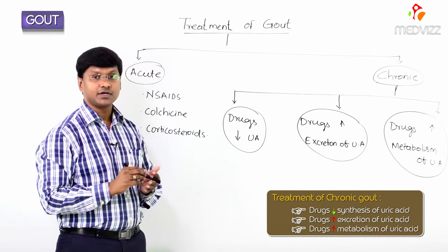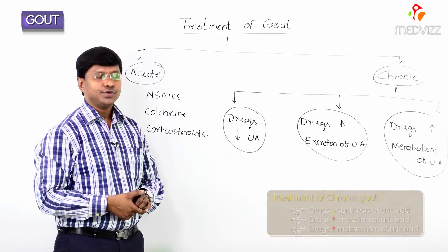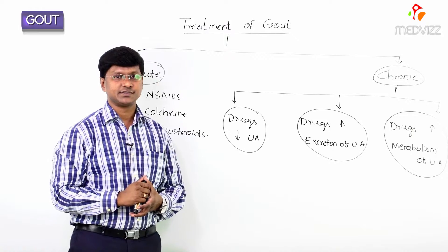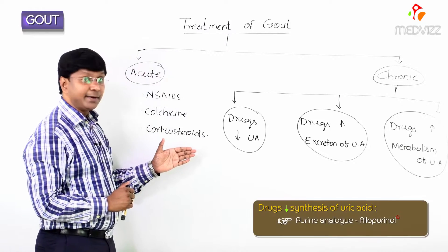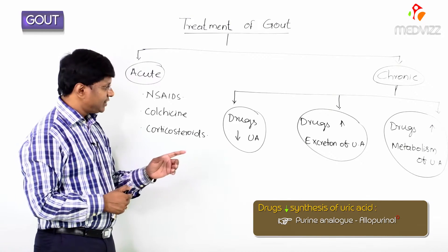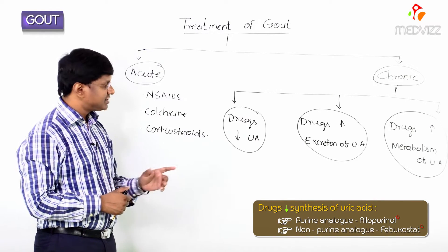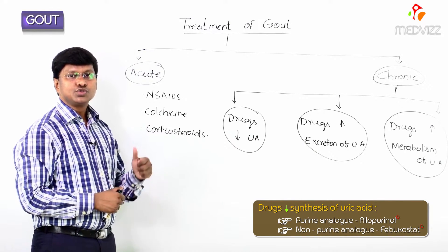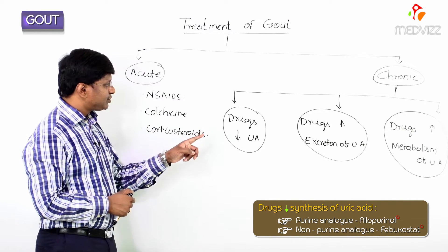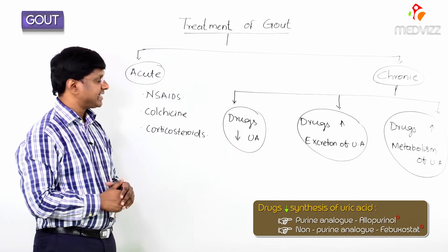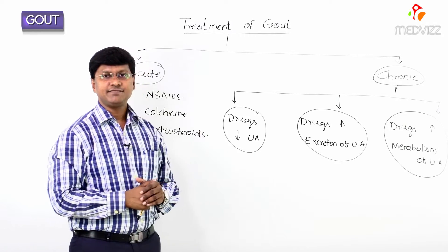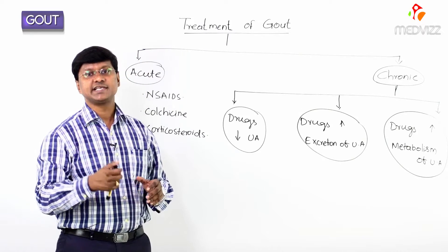The drugs which decrease the synthesis of uric acid are: allopurinol, which is a purine analog, and febuxostat, which is a non-purine agent. These two drugs reduce uric acid synthesis.